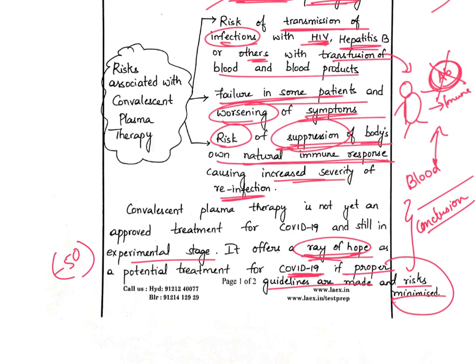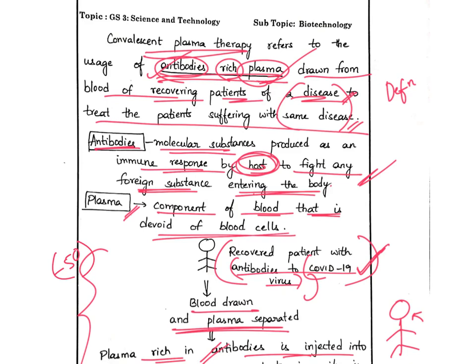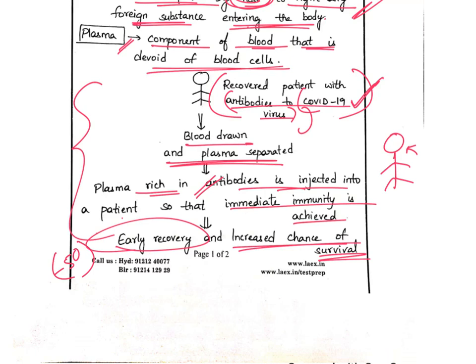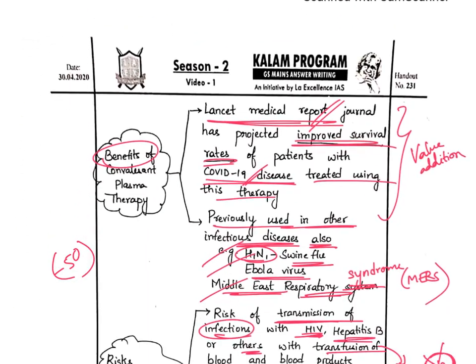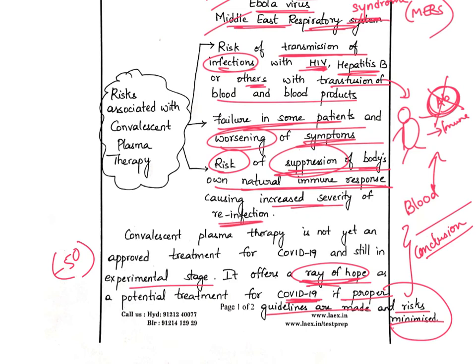To summarize the overall answer: the student gave a decent introduction with a definition and defined key terms, drew a diagram or flow chart explaining how convalescent plasma therapy works, wrote the benefits and risks in a presentable format, and gave a good conclusion. Overall, this is a good answer. For your task today, read about the various modalities of treatment being used for COVID-19, vaccine development — how it is developed, how long it takes, and why it is taking so long for COVID-19. Make a short note and keep it ready for mains, as such questions may appear.